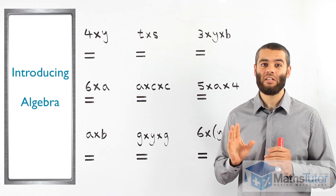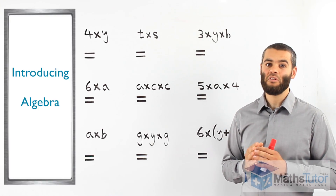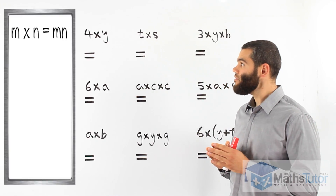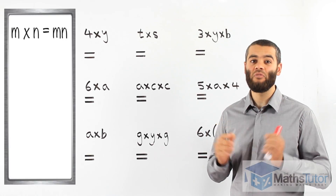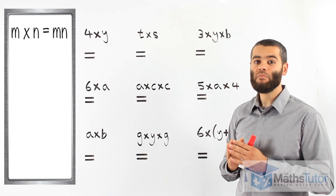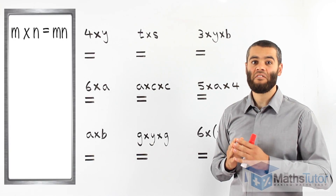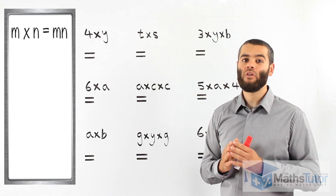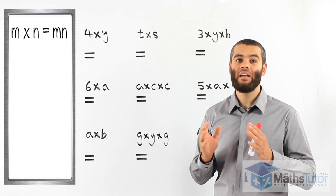Once you get the hang of it, you become very fast. Let's go through some of the rules. In algebra, when we have a multiplication, it's basically invisible. So looking at these examples in these diagrams: M times N is the same as MN. All we do is get rid of the multiplication sign.